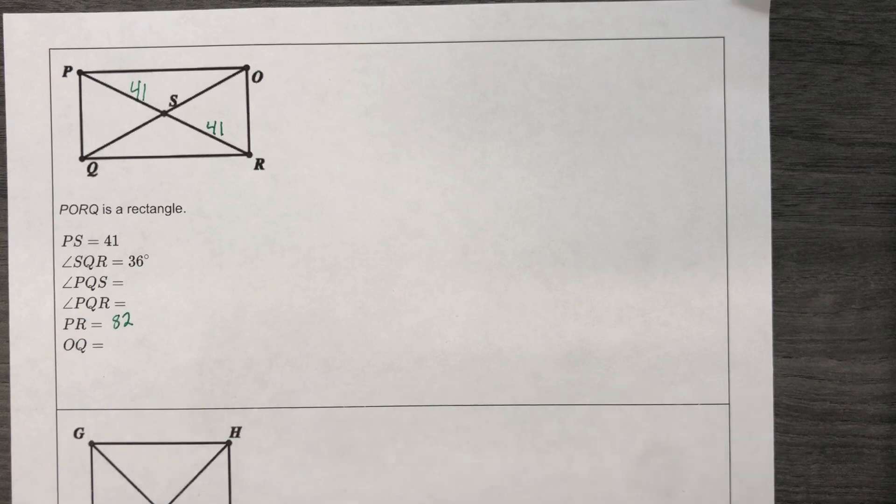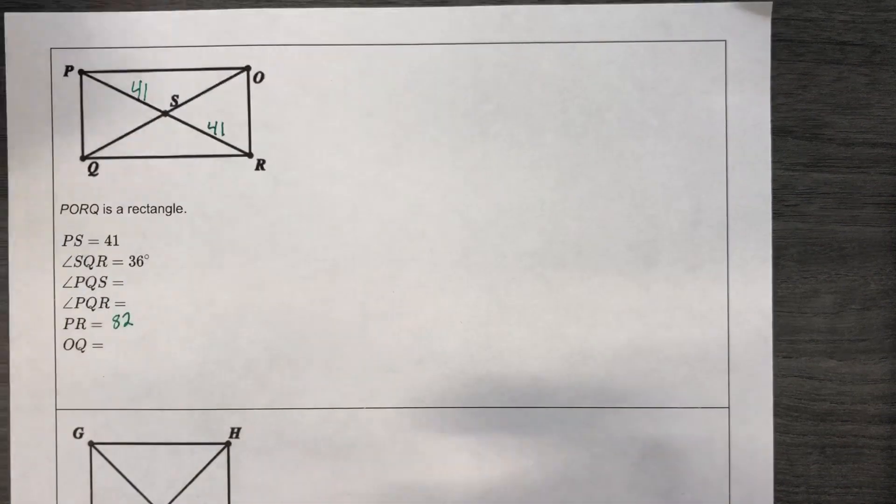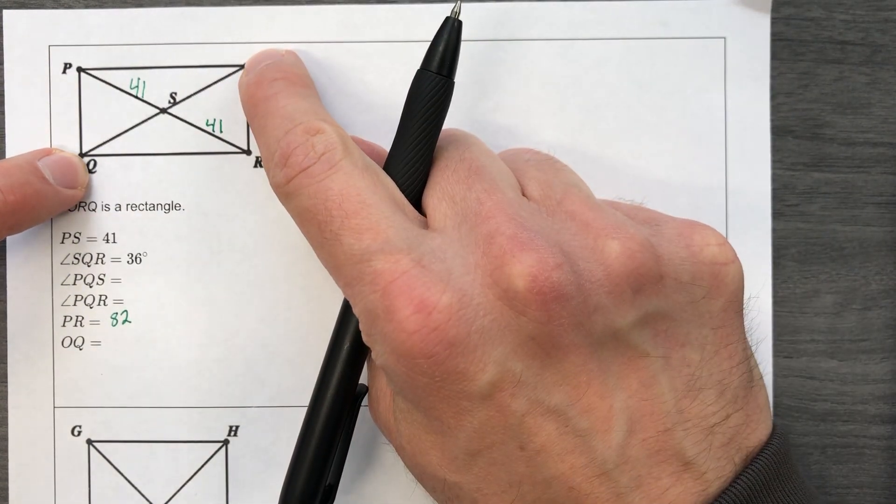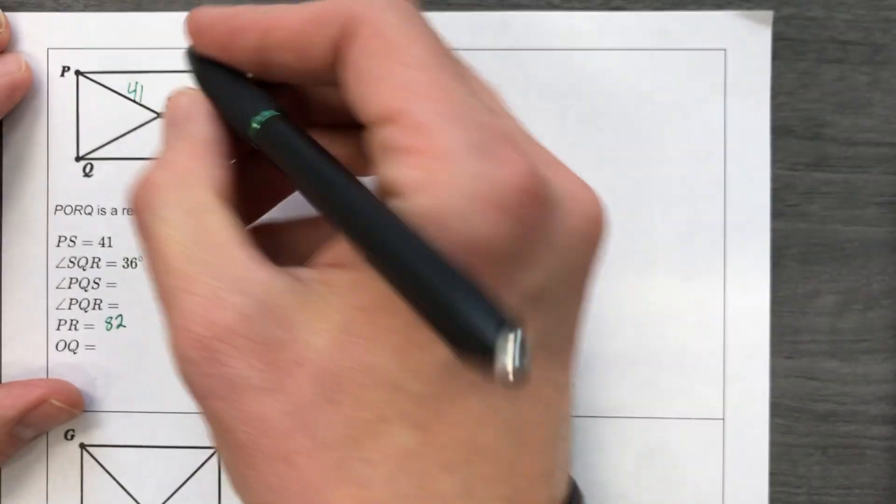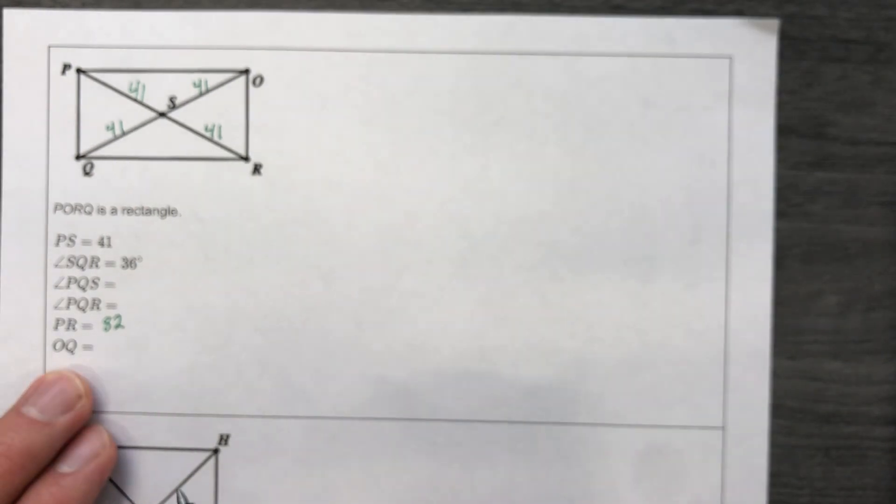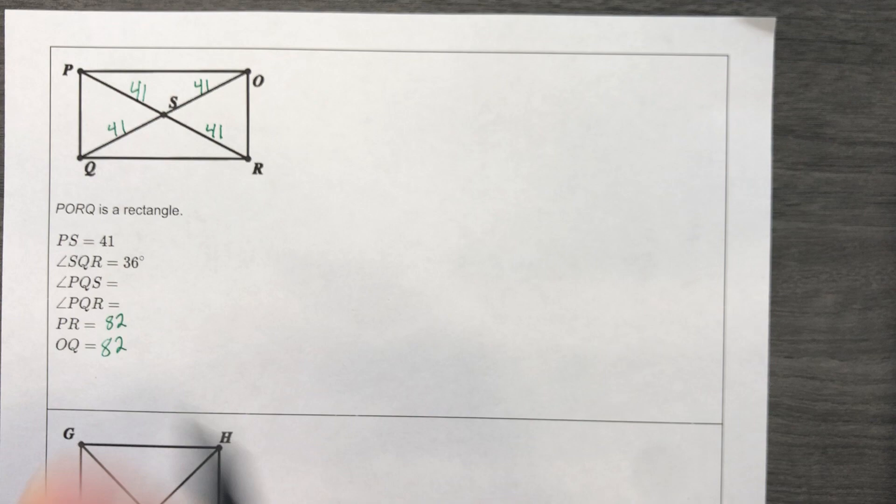All right. Here's what I also know. This is neat. The diagonals of a rectangle are congruent. So, if this is 82, this is 82, then they must both be 41 as well. So, 41, 41. Just saying. When they ask for O-Q, well, also 82.